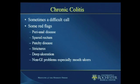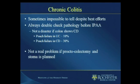Chronic colitis is sometimes a difficult call. There are some red flags for Crohn's disease: perianal disease, a spared rectum, patchy disease, strictures, deep ulceration, and non-GI problems, especially mouth ulcers. All of these would tend to give you a strong hint that this patient may have Crohn's colitis. But it's sometimes impossible to tell despite your best efforts. One thing I would always recommend is that regardless of who did the pathology, double check it again before considering an IPAA reconstructive pouch surgery.